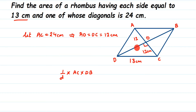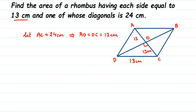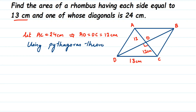Using the Pythagorean theorem, we can find DO. Once we have DO, and since DO and OB are equal because the diagonals bisect each other, we can find the full length of DB. Then we can calculate the area of the rhombus.